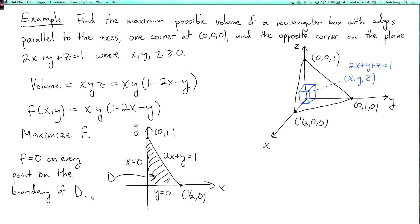So those points on the boundary of the domain correspond to infinitely thin boxes where one of the three coordinates x, y, or z is collapsed to zero. So that's obviously not going to be the maximum.